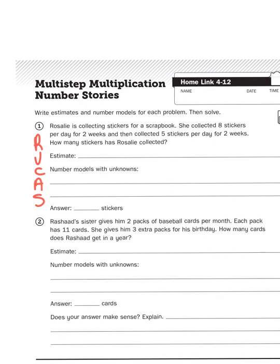So let's re-read. Rosalie is collecting stickers for a scrapbook. She collected eight stickers per day for two weeks, and then she collected five stickers per day for two weeks. How many stickers has Rosalie collected? So what's our number model?